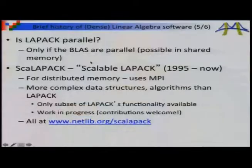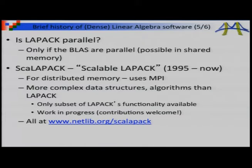That was all sequential. For parallelism on shared-memory machines, if the BLAS are parallel, calling matrix multiply works well. But that doesn't scale to big distributed-memory machines, so there's another package started in 1995 called ScaLAPACK — Scalable LAPACK — using distributed memory MPI with more complex data structures to spread the matrix across processors. We have ongoing NSF support to continue developing it. Since MPI code is so much harder to write, only a subset of LAPACK's functionality is currently available.